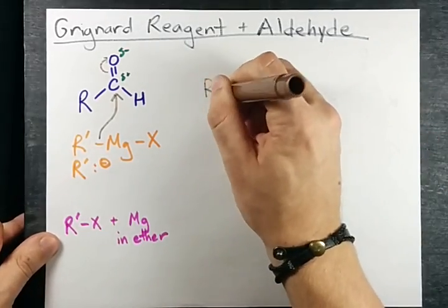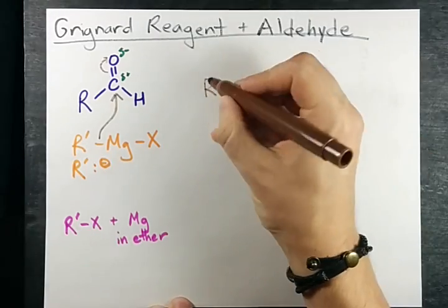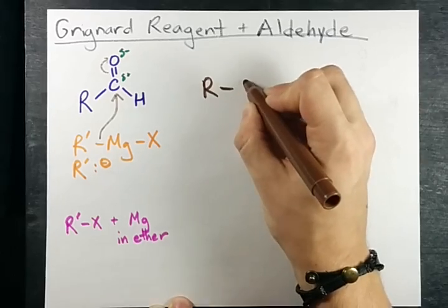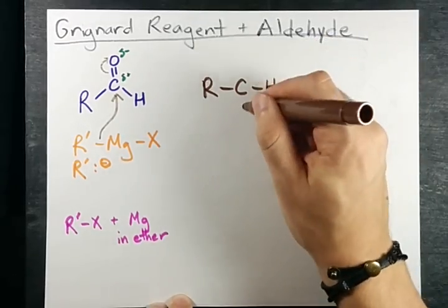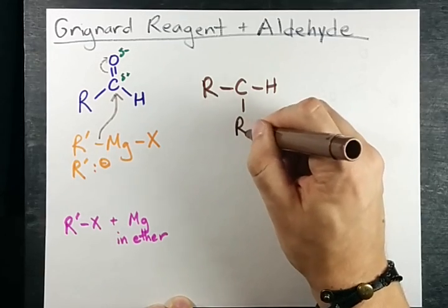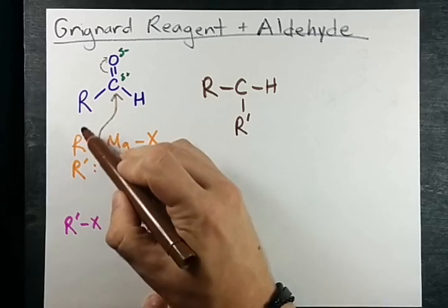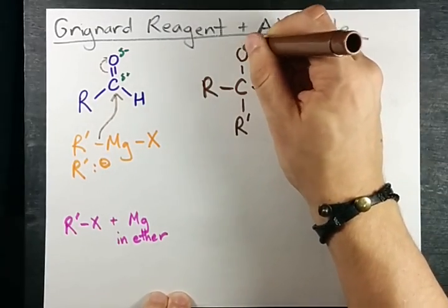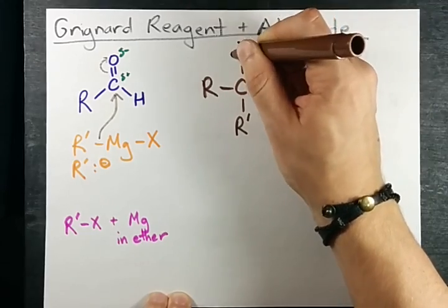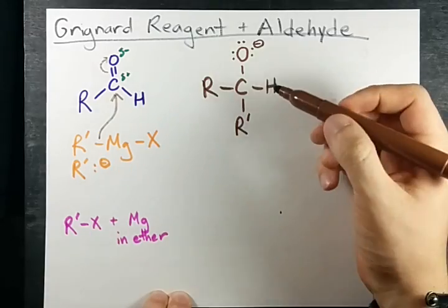What we end up with is an R group connected to the carbon, still connected to the hydrogen, now connected to this R' group. I've only labeled it R' to show you that these don't have to be the same length. And we're left with this oxygen which now has three lone pairs as opposed to the two lone pairs that it started with.